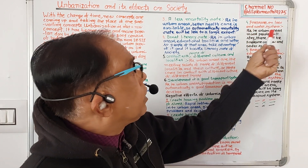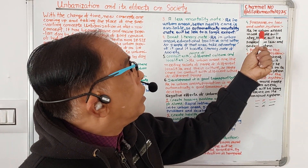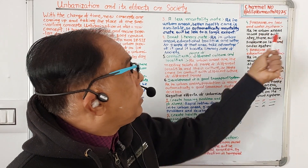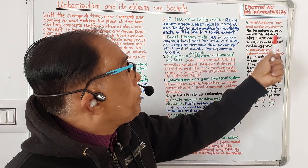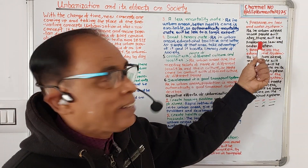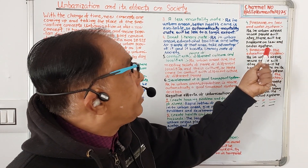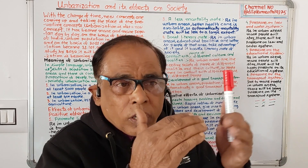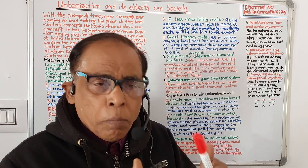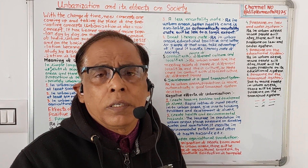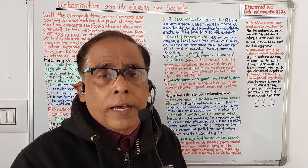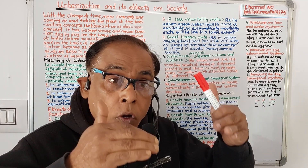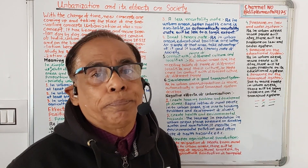Number four: pressure on law and order system. As in urban areas more people will stay, there will be heavy pressure on the law and order system to maintain order and security.